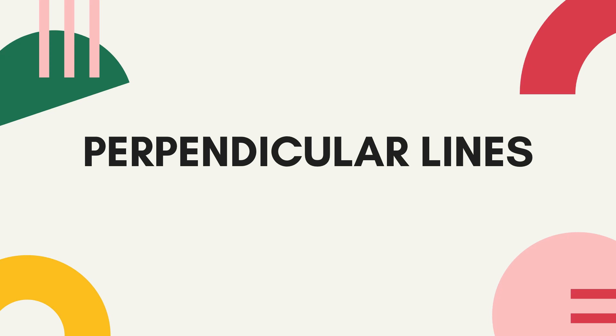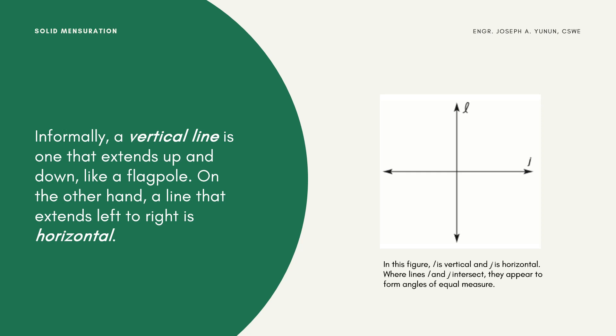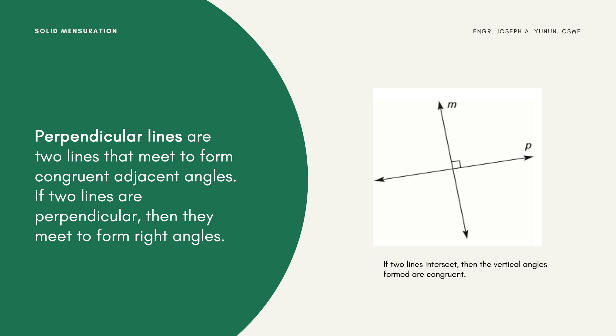A vertical line is one that extends up and down, like a flagpole, while a horizontal line extends left to right. In the given figure, line L is vertical and line J is horizontal. Where lines L and J intersect, they form angles of equal measure. Perpendicular lines are two lines that meet to form congruent adjacent angles. If two lines are perpendicular, they meet to form right angles, and the vertical angles formed are congruent.